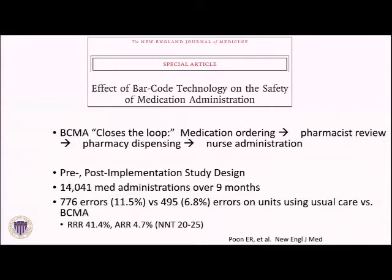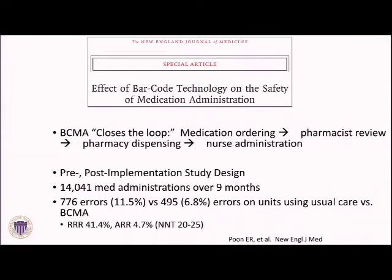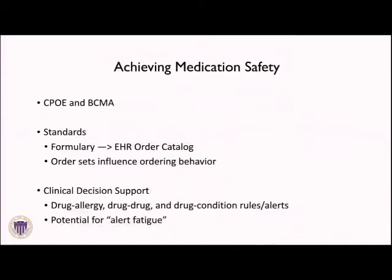The other part of medication safety is barcode medication administration (BCMA), which we now do in our hospitals. You can think of BCMA as closing the loop: the same order I write is the same order the pharmacist reviews and approves, resulting in a medication being labeled and dispensed from the pharmacy. At the bedside, the nurse scans the patient wristband, the medication, and the electronic health record to confirm this order for this patient and this medication are all appropriate. This closing of the loop further reduces medication errors — by about 40 percent relative risk reduction, and an absolute risk reduction of about 5 percent, compared with usual care. So for achieving medication safety, CPOE and BCMA are fundamental.